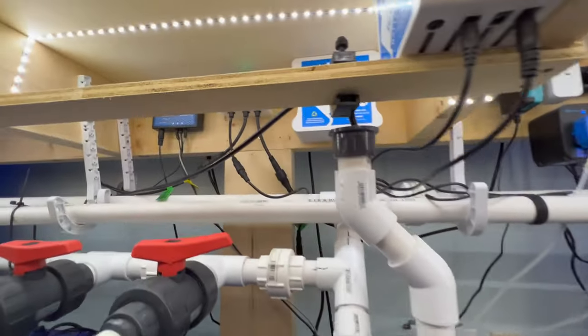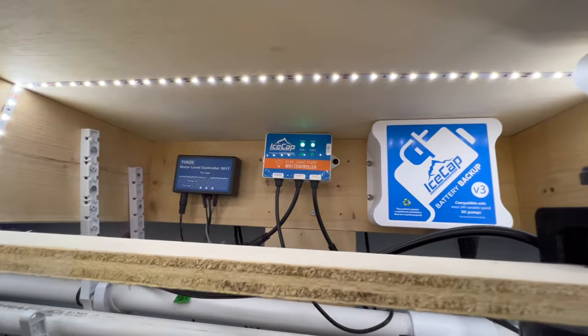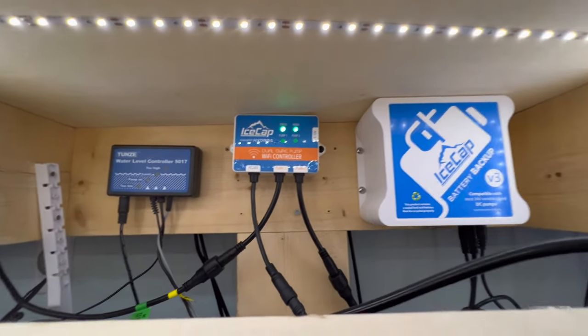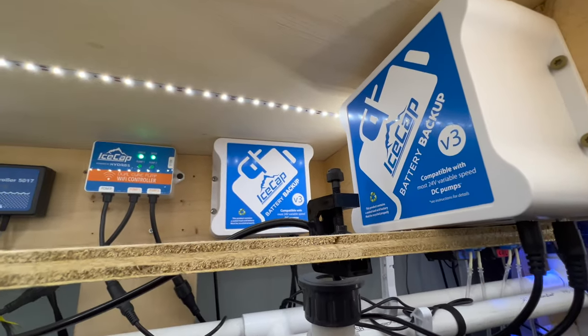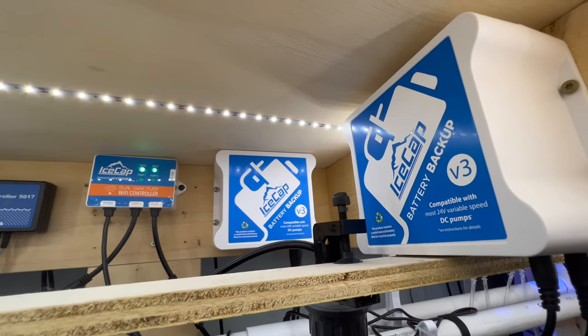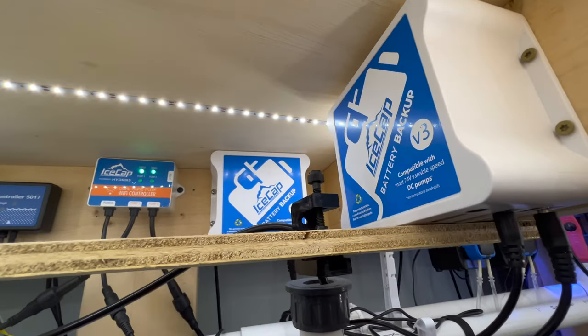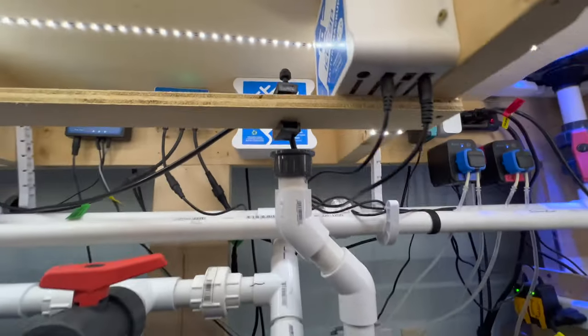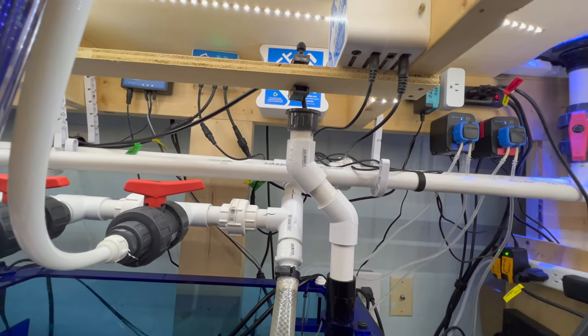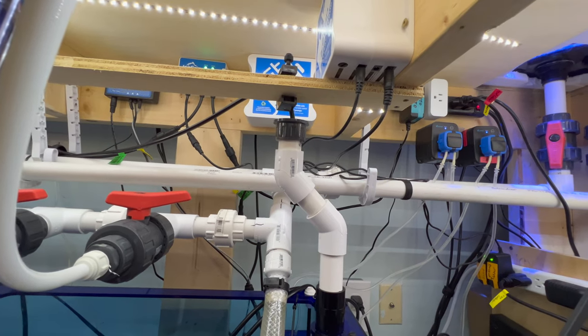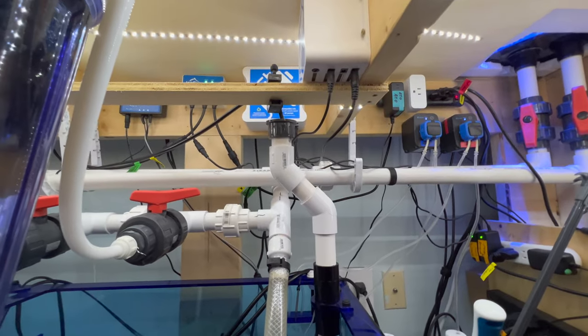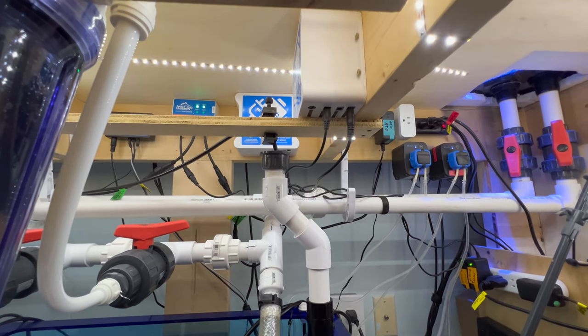Coming up here into the back, I have my IceCap wavemaker controller for the two gyre. And I also have two battery backups, the V3s. I don't know my electrics too well if they're in series or parallel. I think it's in series because it has longer runtime, not higher voltage. So I've tested it to about five hours, my wavemakers will automatically run at 40% if I do lose power.